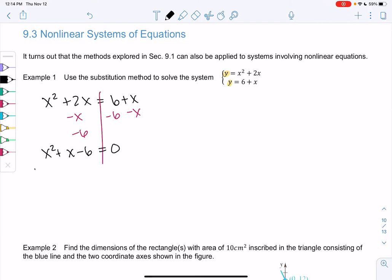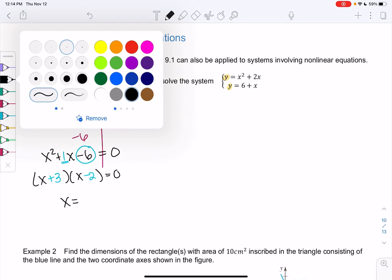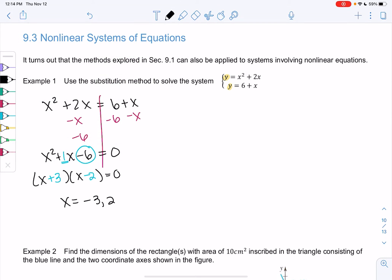And we'll factor, we need a product of negative 6 and a sum of 1. I think that gives me positive 3 and minus 2. So x can be negative 3 or positive 2. So that means there's two solutions.